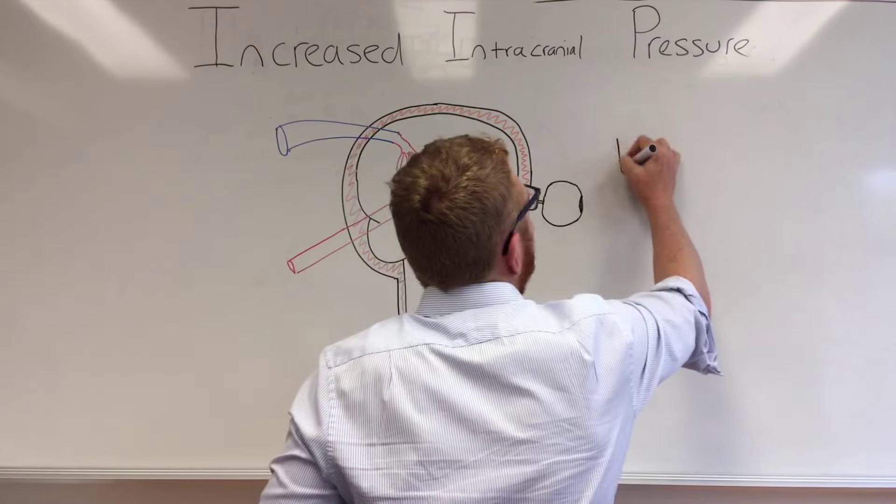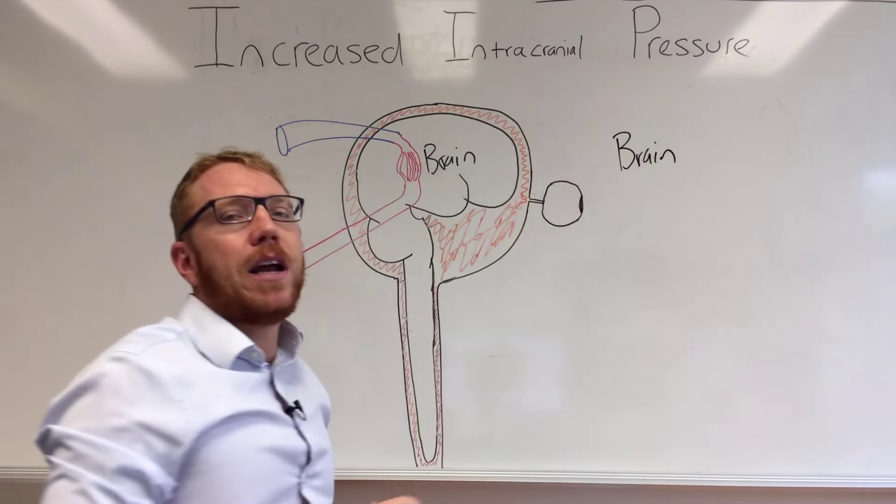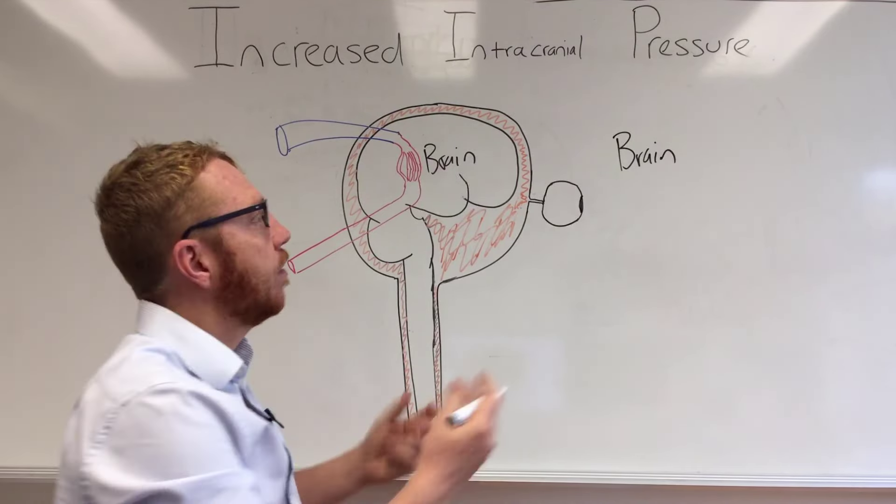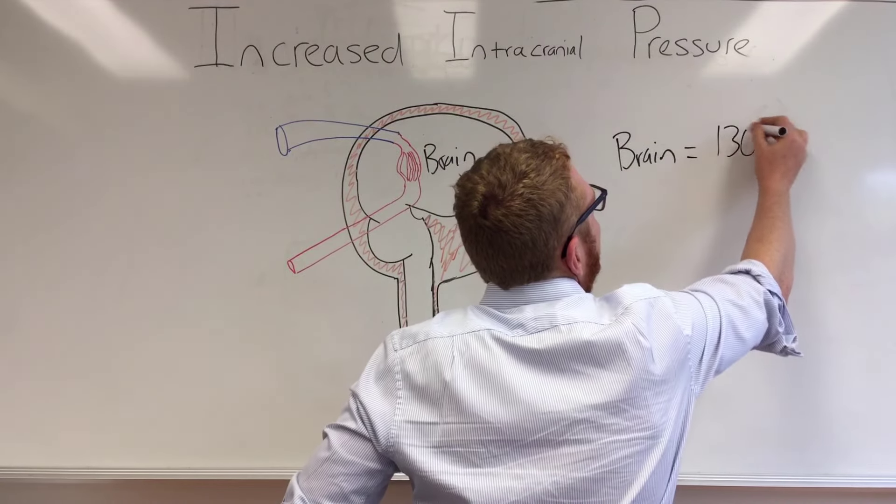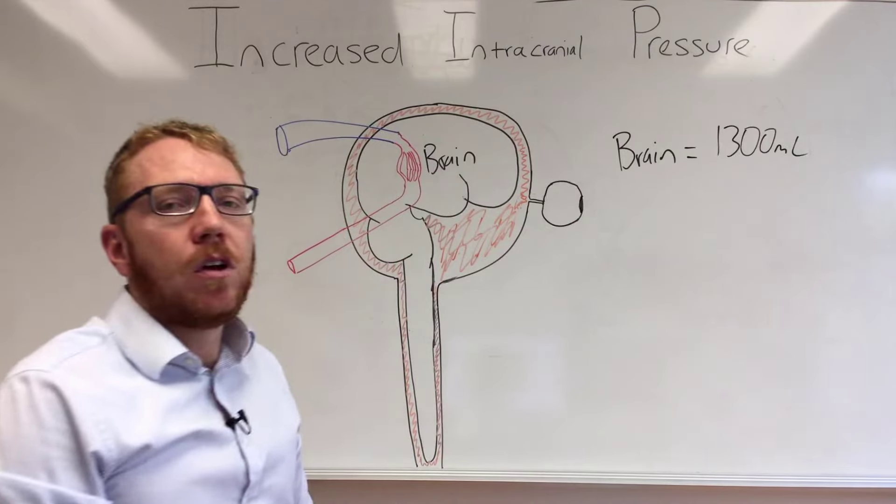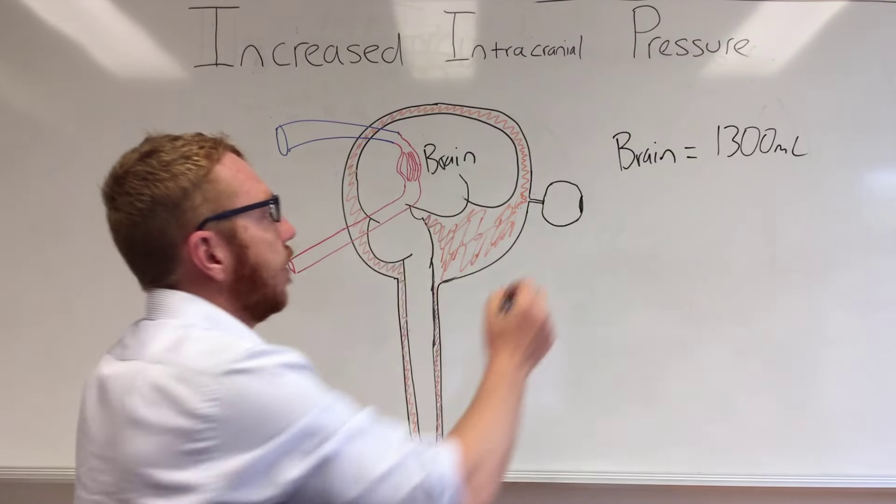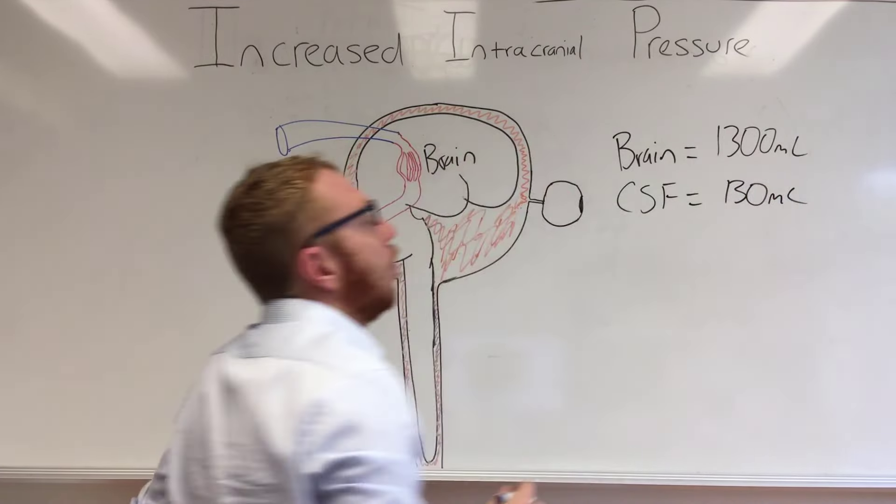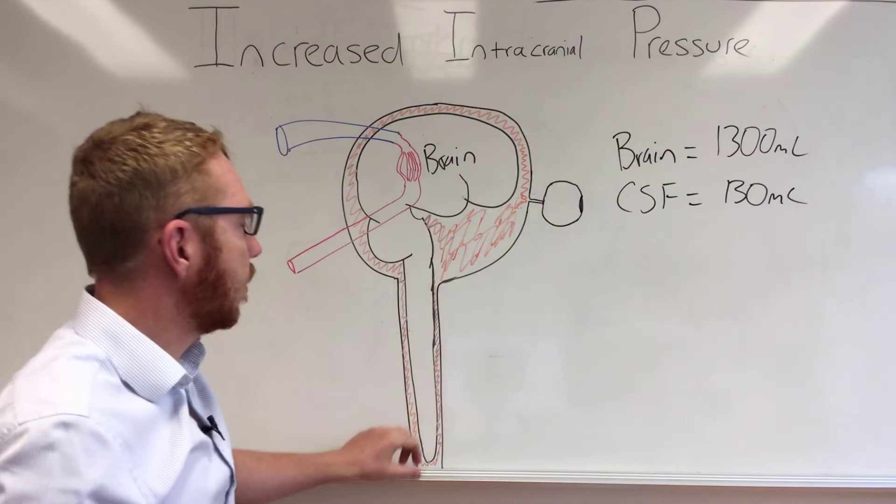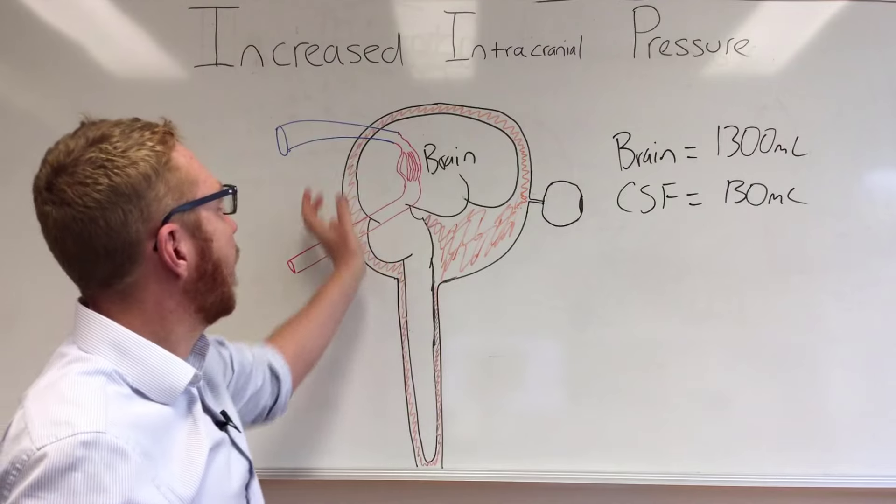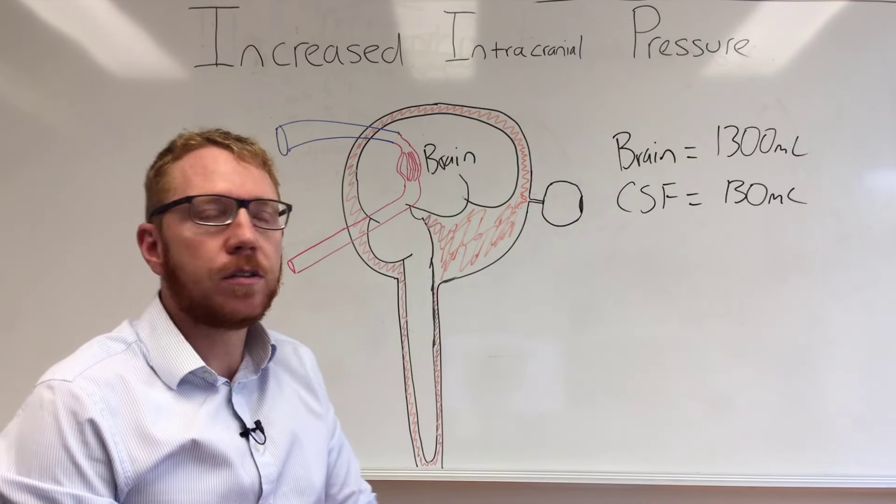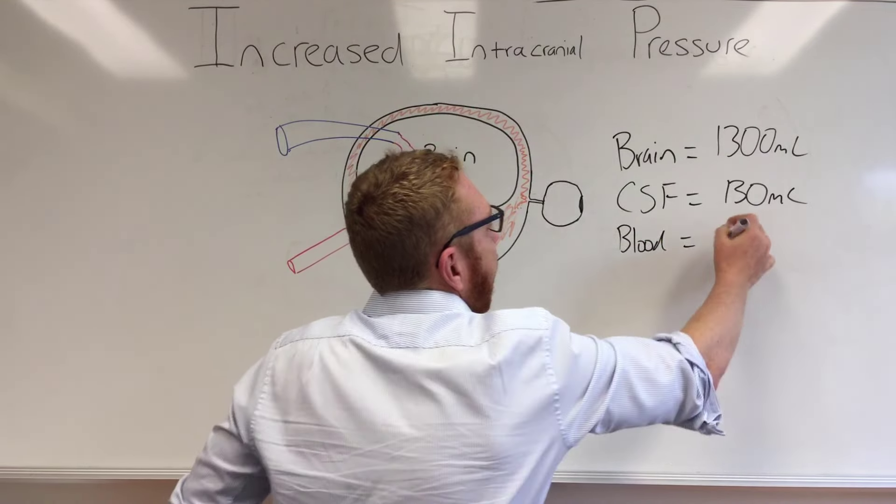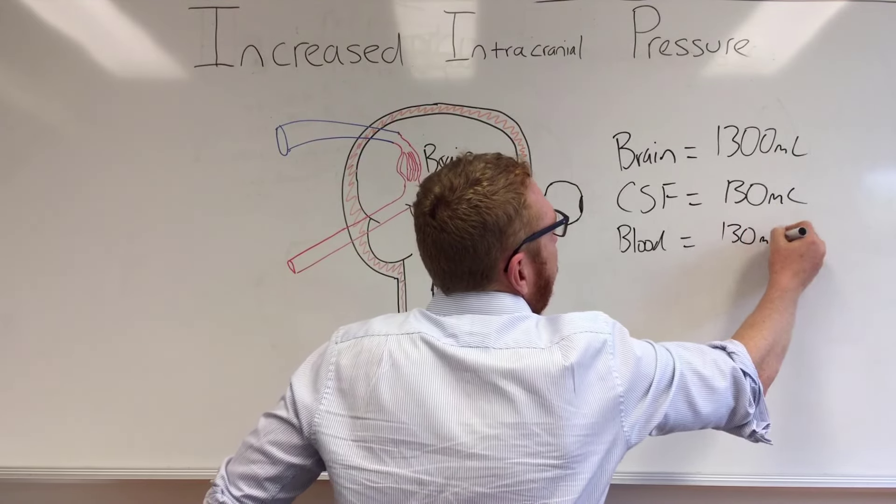Let's start with the brain. The volume of the brain, because we know the brain weighs about 1,300 to 1,500 grams, the volume basically is that, so it is 1,300 mls of volume. When we look at the CSF, the CSF takes up approximately 130 mls of fluid. This is all around the brain going down to the spinal cord where it travels down and comes back up and gets reabsorbed into the dural sinuses. And then finally the blood itself is about 130 mls of volume.